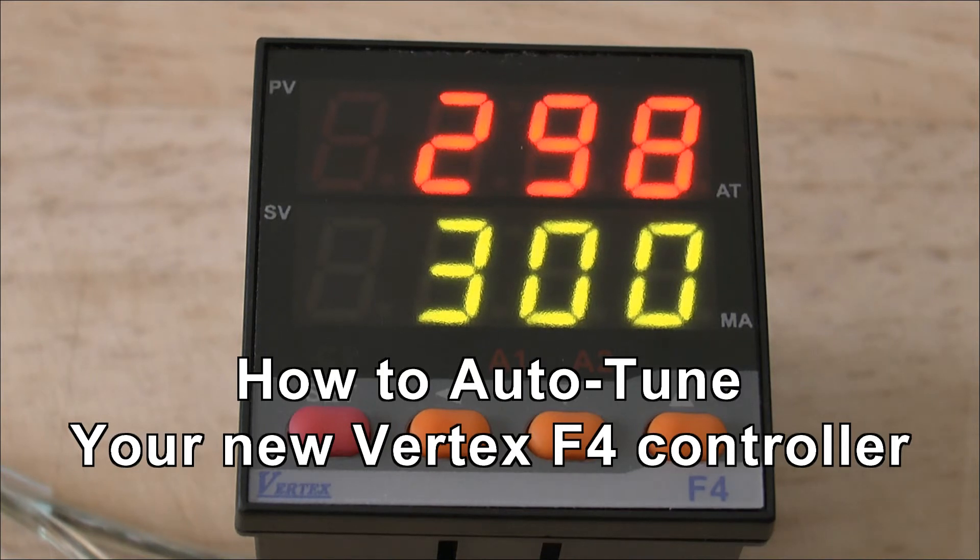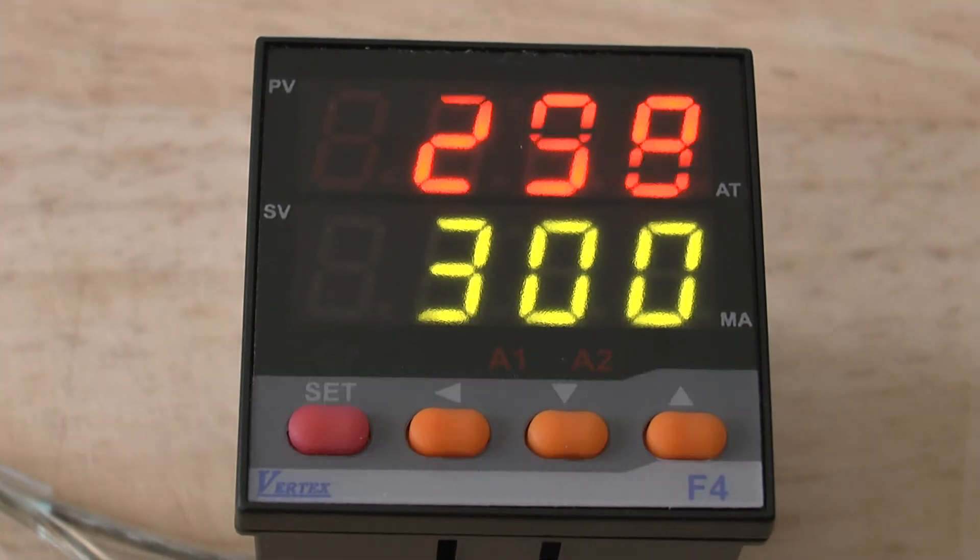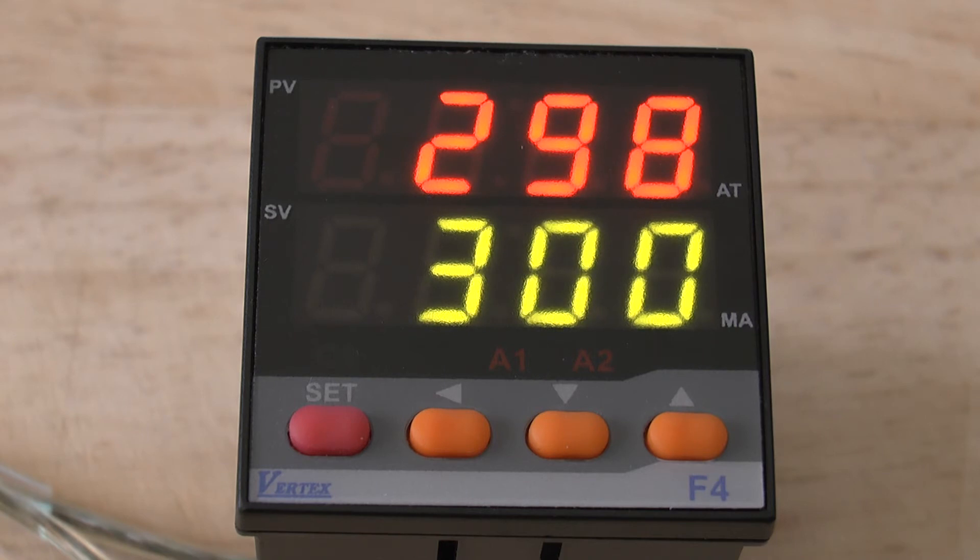The PID parameters are responsible for the way in which the controller switches your heating elements on and off. In order to get the most accurate control and best results from your controller, we strongly suggest that you do an auto-tune process. The auto-tune process will set the PID parameters automatically so that you get good control.